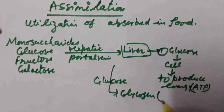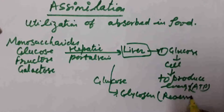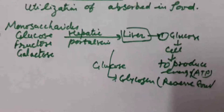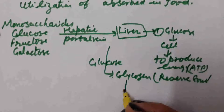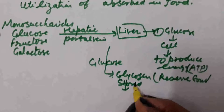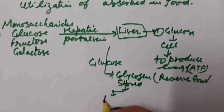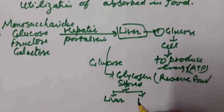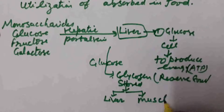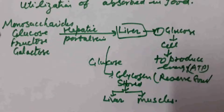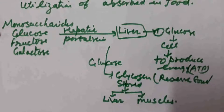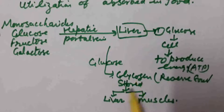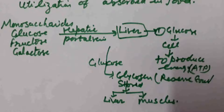What is glycogen? It is the reserved food in our body and is stored at two places. Glucose is stored in the liver as well as in muscles. Whenever glucose is required, this reserved food, that is glycogen, is further converted back into glucose.